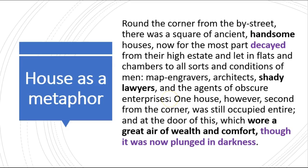Why does Stevenson include these people? Map engravers shape the world — they show us what the world looks like — and that's what Stevenson is trying to do: he's saying read my book and I'm going to show you a true picture of what mankind is really like. Architects build things, and Stevenson is trying to build a more critical readership, showing the world through the use of buildings and metaphor. And then there's a wry joke: he includes 'shady lawyers' as his way of pointing to Utterson, who is himself a shady lawyer willing to cover up Jekyll's knowledge of Hyde the murderer.